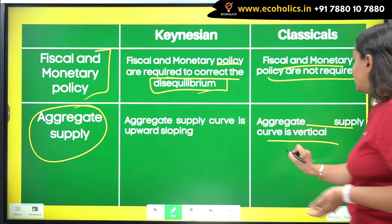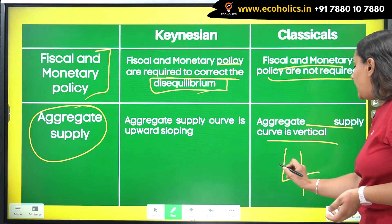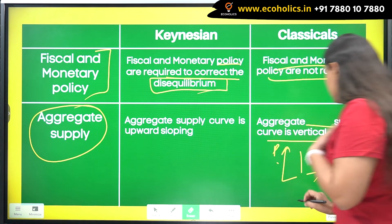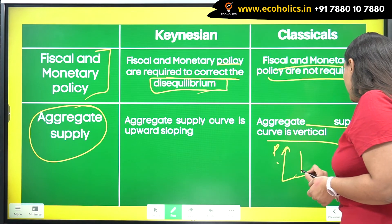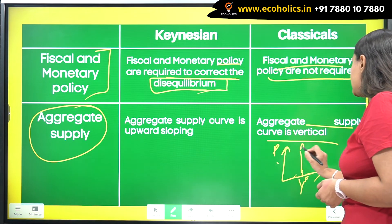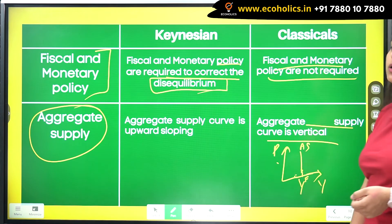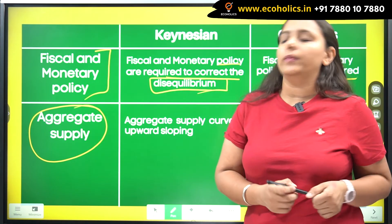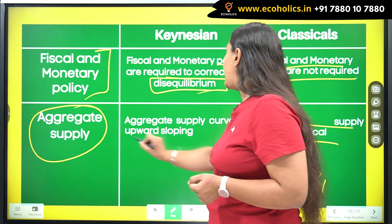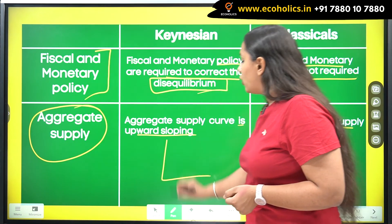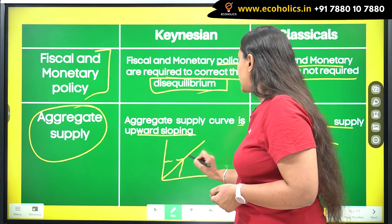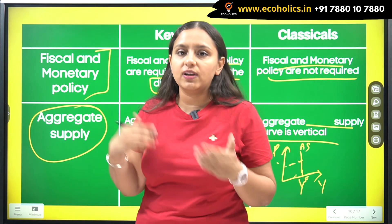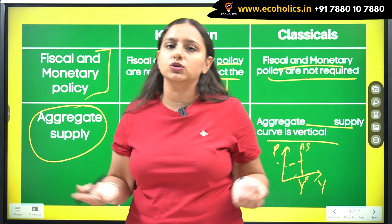The Classical aggregate supply curve is vertical at the full employment level — for every price level the same output is produced, because the economy is always at full employment with prices and wages continuously adjusting. Keynesians, on the other hand, believe aggregate supply is upward sloping. If output increases, prices will increase because workers do not have perfect price information, so their wages adjust slowly. As prices rise and wages lag behind, firms can produce more, giving an upward-sloping AS curve.